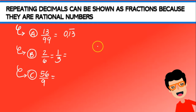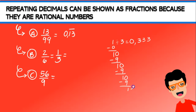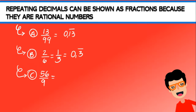Now let's try 1 divided by 3. We get 0, then 10 divided by 3 is 3 with remainder 1. We add a zero and get 10 divided by 3 again — 3, remainder 1. We get the same residual over and over, producing 0.333... So we write 0.3 with a line on top of the 3, indicating the 3 repeats infinitely.